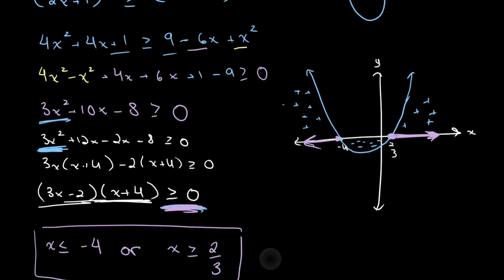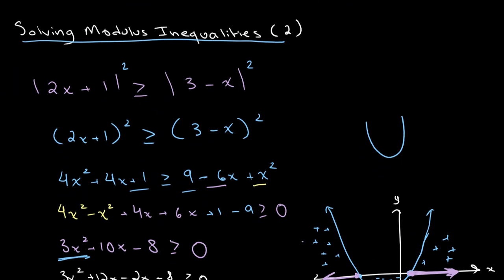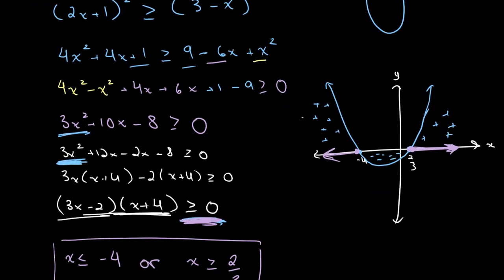As a quick recap: when solving modulus inequalities with absolute values on both sides, square both sides to eliminate the absolute values, then solve algebraically — factorizing the quadratic expression as needed. Finally, draw the graph to see where it is greater than or less than zero to determine the solution.